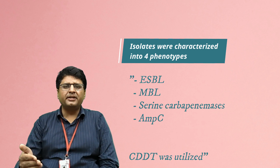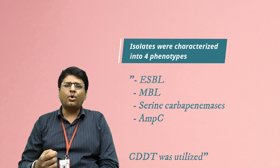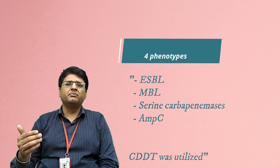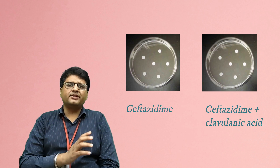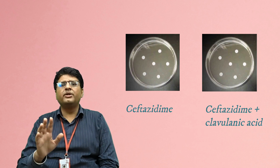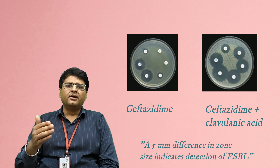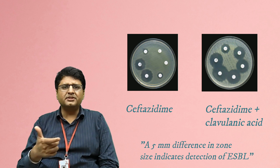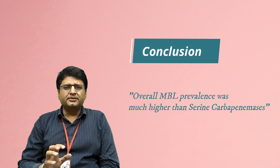These isolates were categorized into four phenotypes — ESBLs, MBLs, serine carbapenemases, and MC — based on the CDDT (combined disc diffusion test). In the CDDT, the difference in zone of inhibition between ceftazidime and ceftazidime plus clavulanic acid is analyzed; a difference of 5mm or more is a positive test for ESBLs.